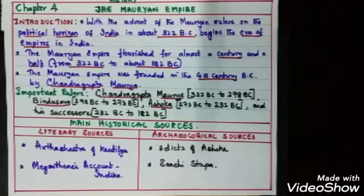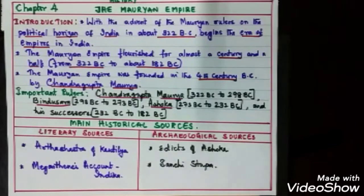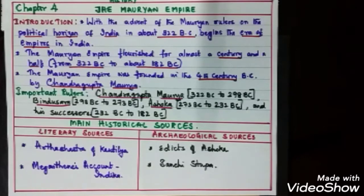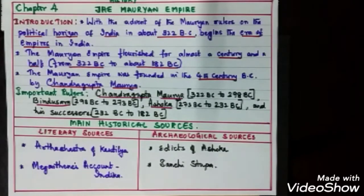Good morning children. Today we are going to learn another chapter from history — Chapter 4: The Mauryan Empire. Beginning with the introduction: with the advent of the Mauryan rulers on the political horizon of India in about 322 BC, which begins the era of empires in India. This is the first time in the history of India that the empire system started.